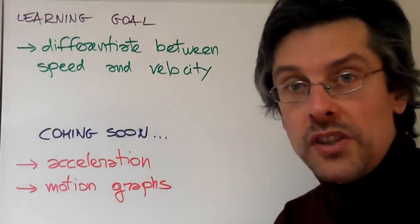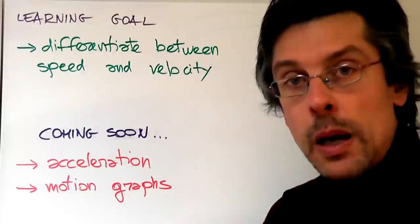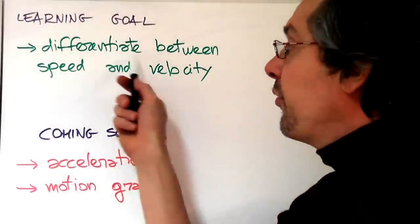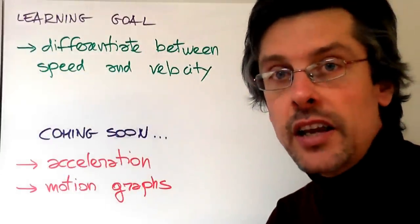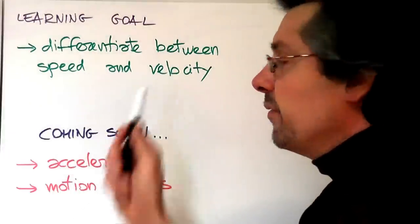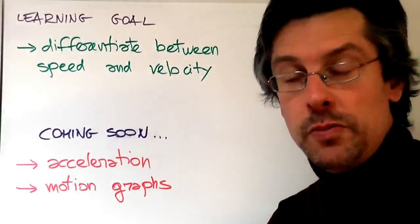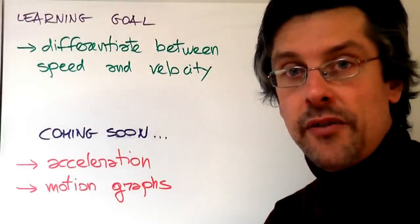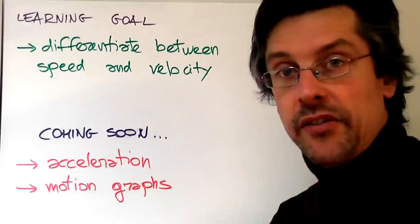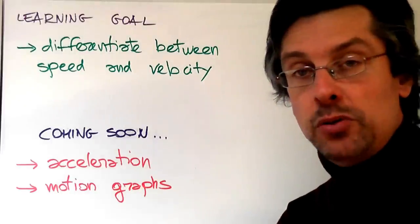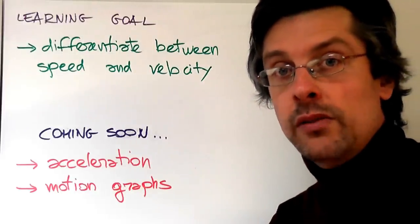So what was the learning goal of this lesson? By the end of this lesson, you should be able to differentiate, that means to distinguish, between speed and velocity. So not only should you be able to tell when something is speed and when something is velocity, you should be able to distinguish one from the other.